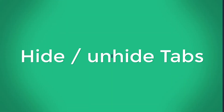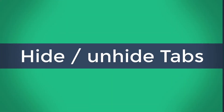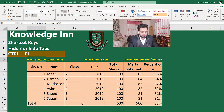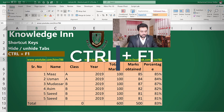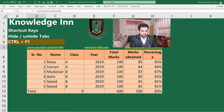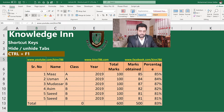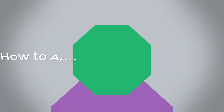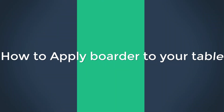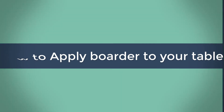If we want to hide or unhide the ribbon tabs, pressing Ctrl+F1 can hide the tab, and pressing Ctrl+F1 again can unhide the tab.